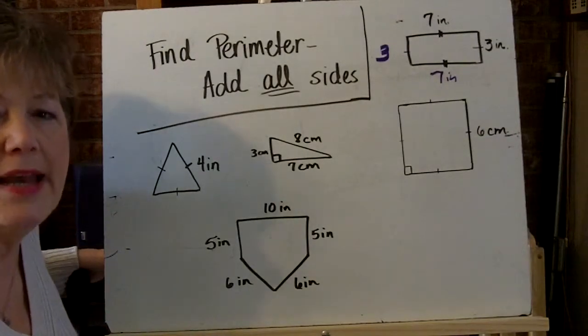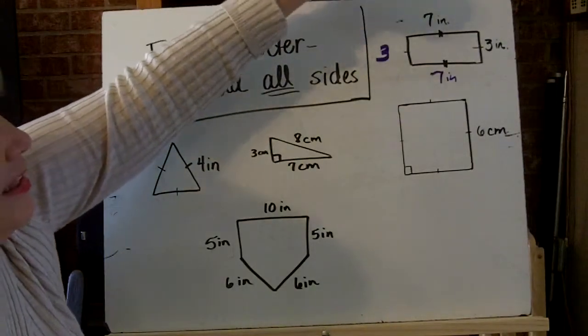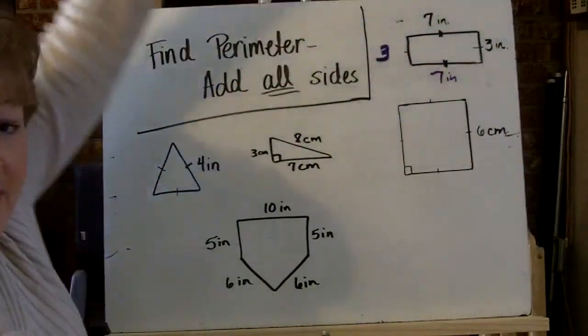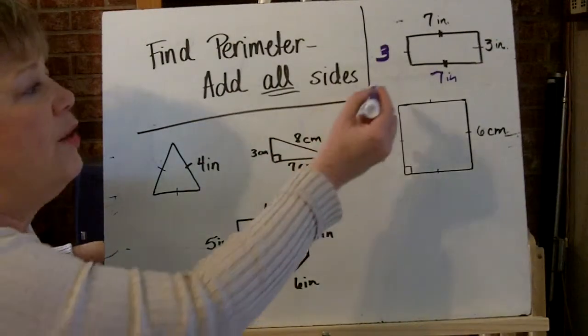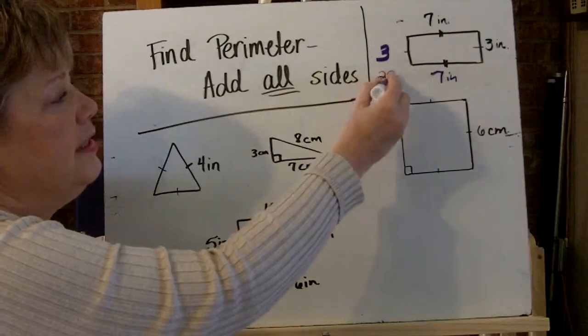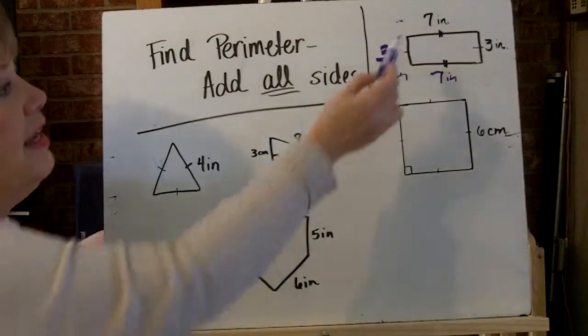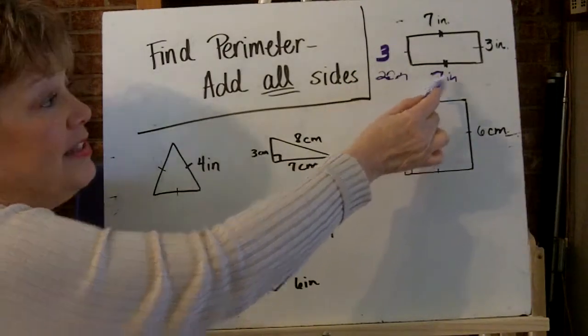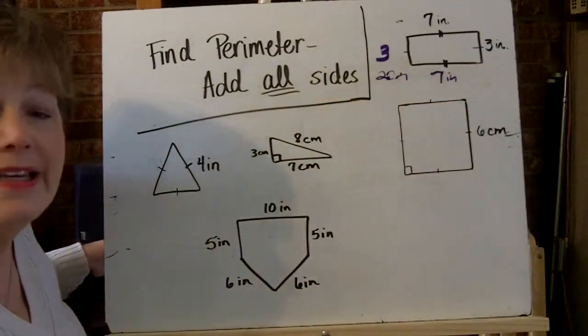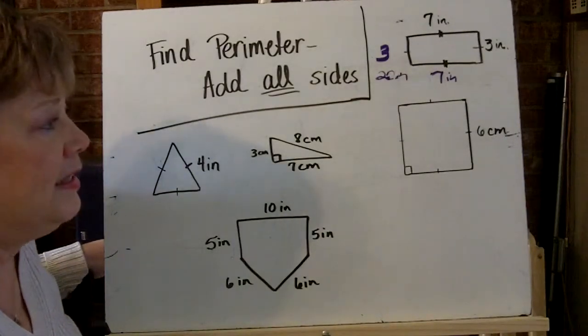Some of you right now may see that seven plus three is 10, and three plus seven is 10. So immediately, you know that the perimeter of that rectangle is 20 inches. Or you can go all the way around and just say seven plus three is 10 plus seven more is 17 plus three more is 20. So either way, you're going to come up with 20 inches.